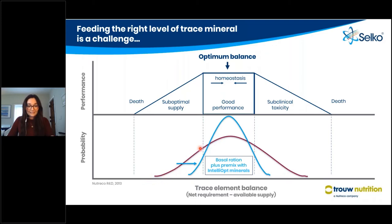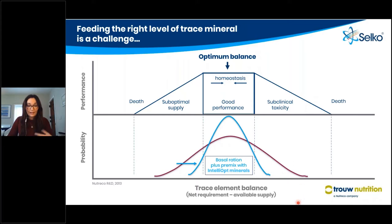This broader line shows a lot more variation in the probability of whether the animal has got optimal supply or is in either toxicity or suboptimal supply areas. This represents feeding a lower bioavailability source where some animals may be falling into these two categories. However, if you feed a highly bioavailable source of trace mineral, we reduce the probability that the animals are outside of this optimum balance.